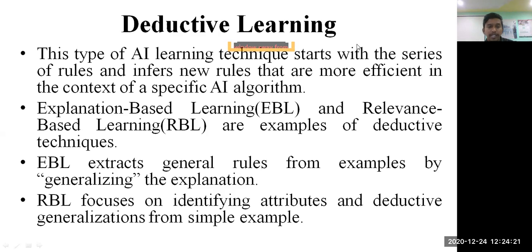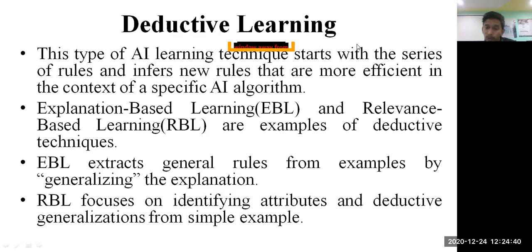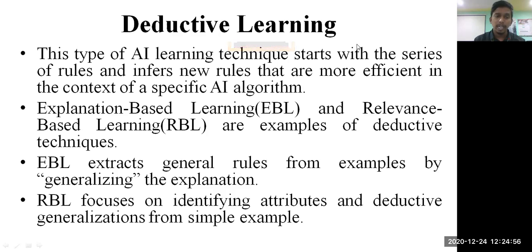Explanation-based learning extracts general rules from examples by generalizing the explanation — it understands the evidence provided and accordingly derives general rules. Relevance-based learning focuses on identifying attributes and deductive generalization from simple examples: if a task was already completed by an intelligent machine, it tries to understand from previously available tasks, and accordingly the relevance of an algorithm or technique is understood.